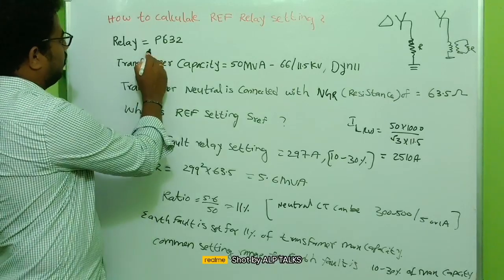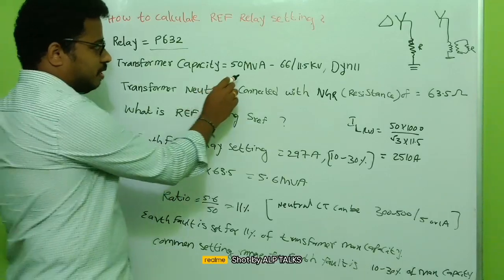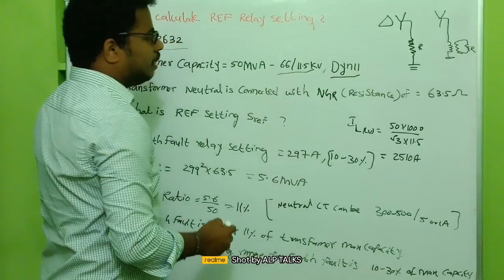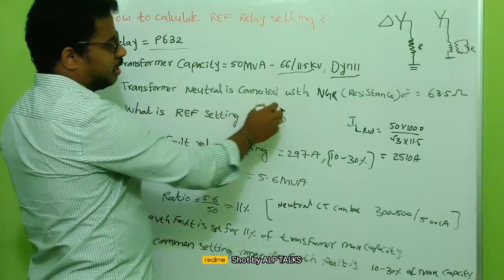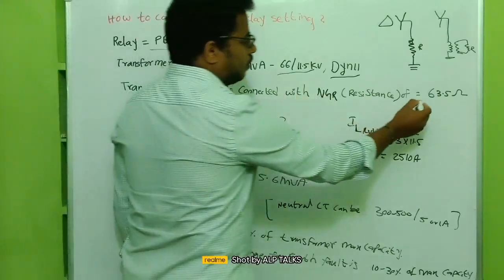The relay is RP632 model, so the transformer capacity is 50 MVA and 66 by 11.5 kV, and it is of DYN11 vector group. The transformer neutral is connected with the NGR resistor of 63.5 ohm.